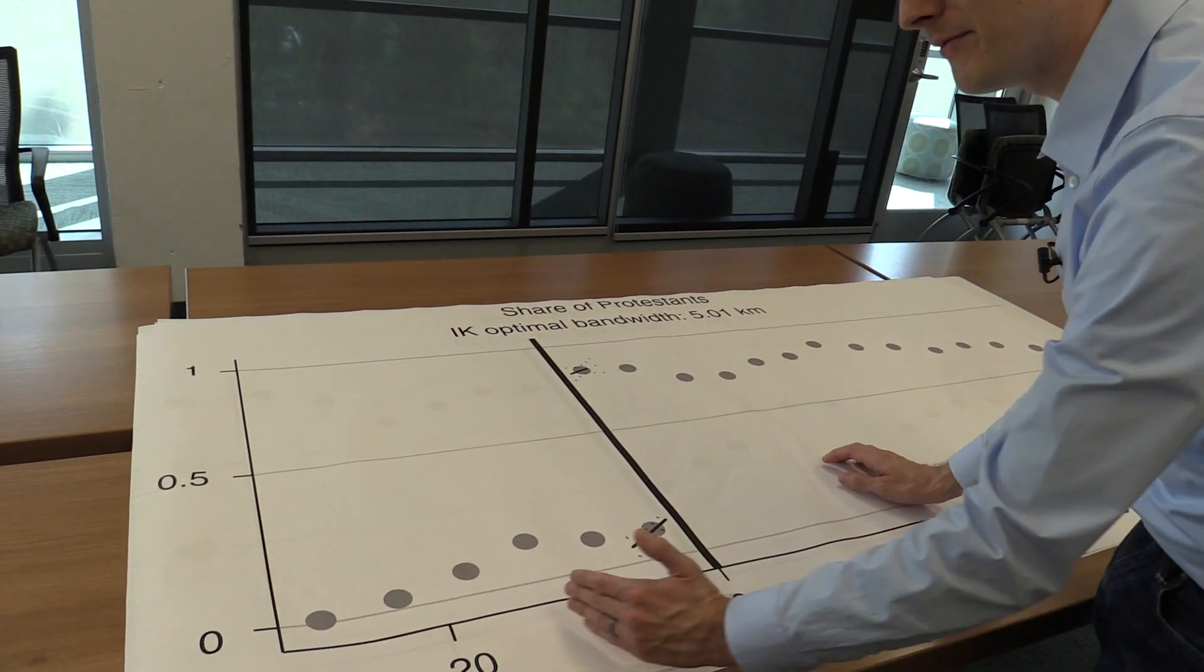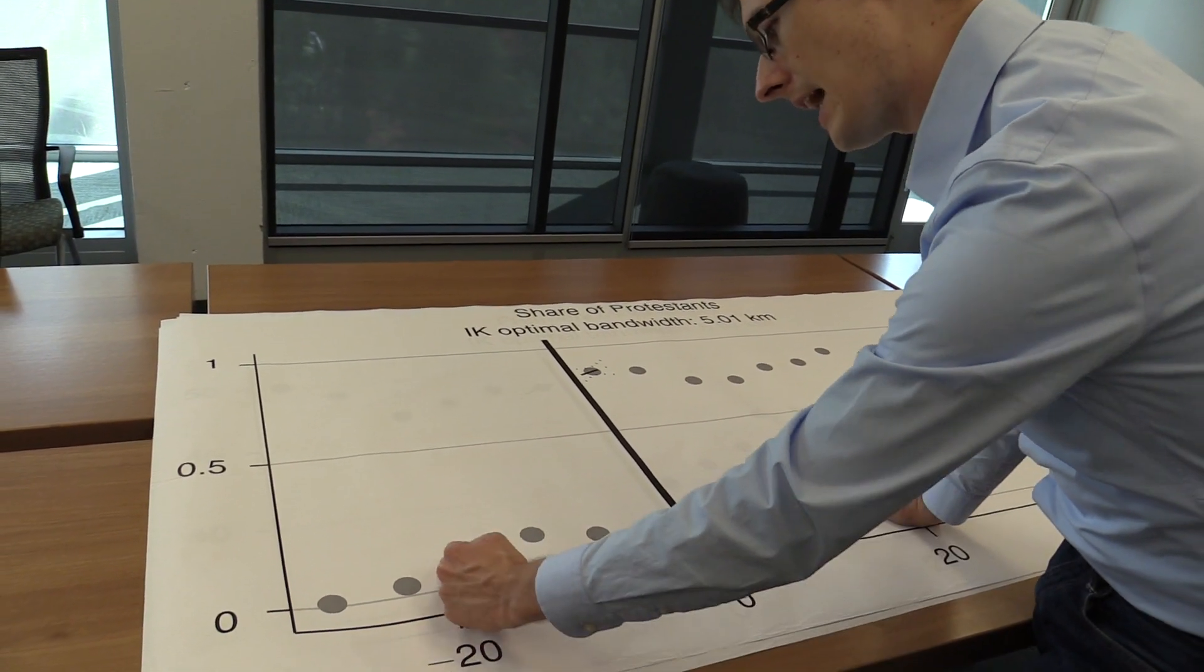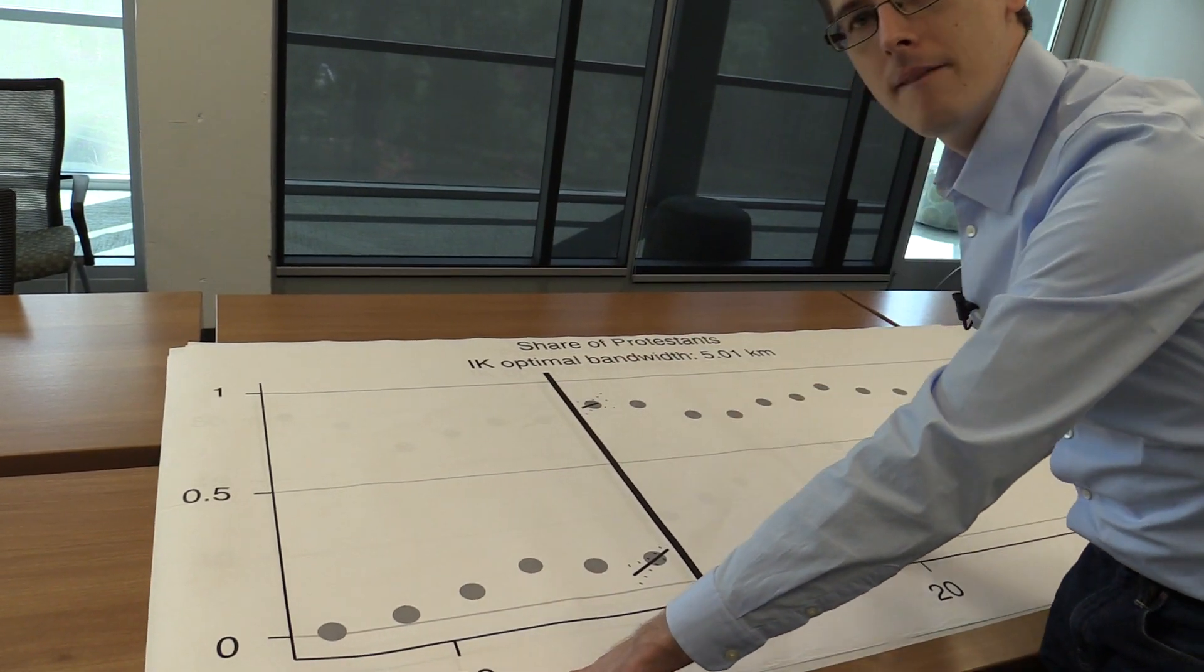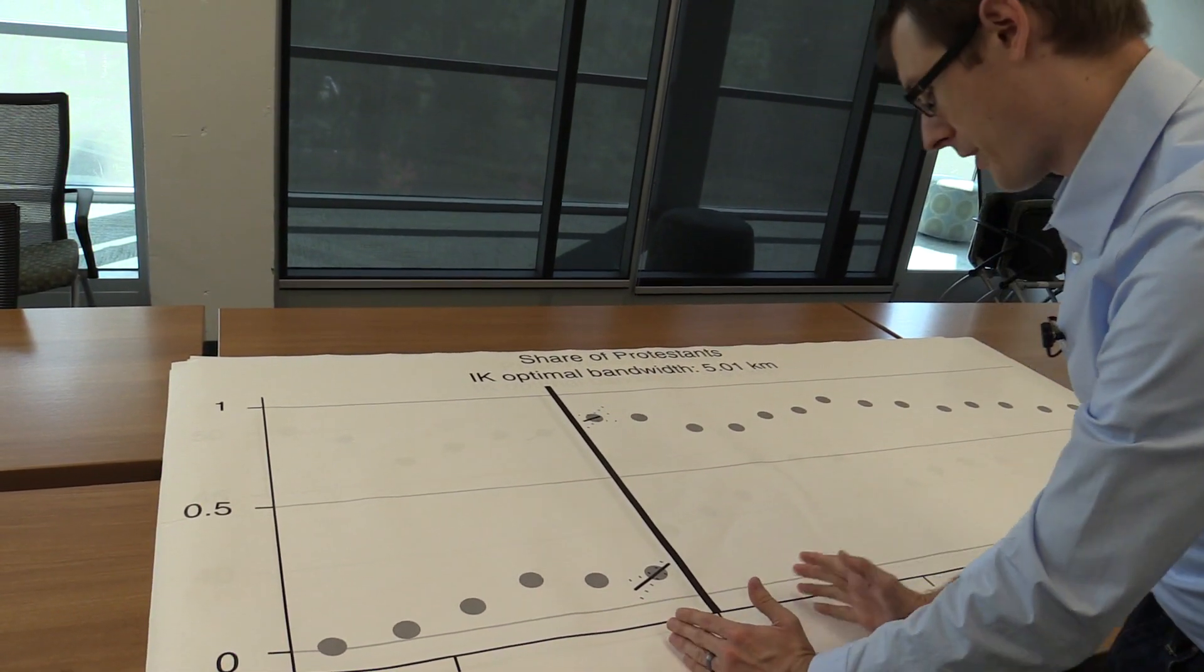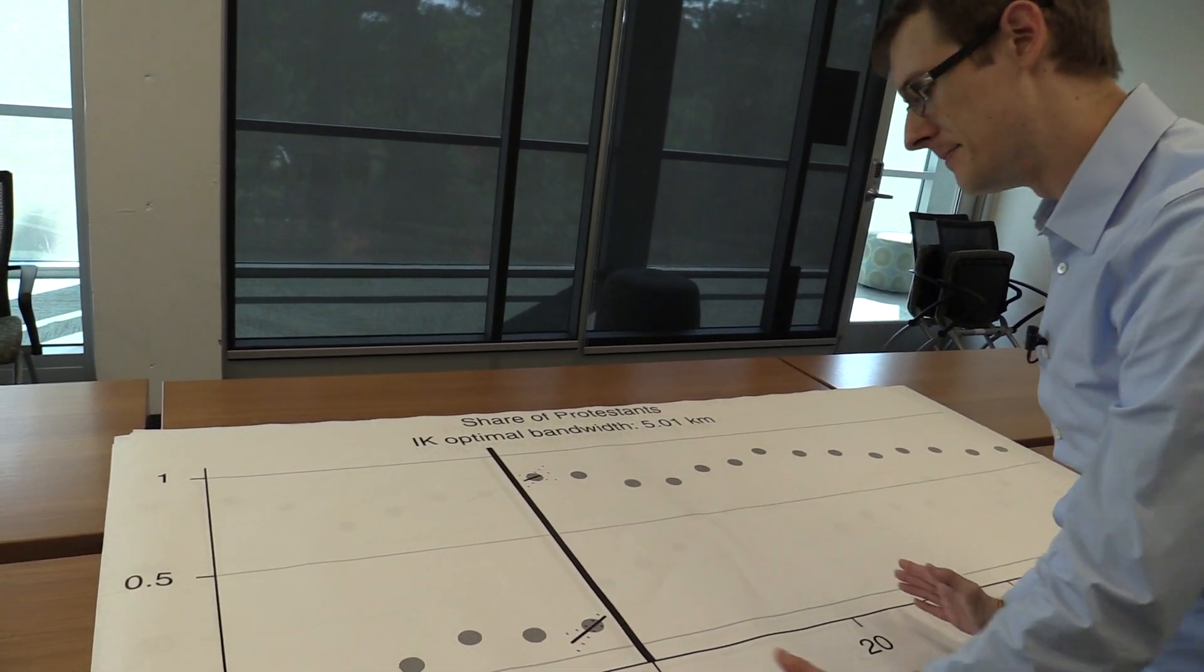So then on the horizontal axis, I have distance to the border. Over here, a town right here is minus 20 kilometers from the border. And over here, we've got 20 kilometers from the border in the other direction.